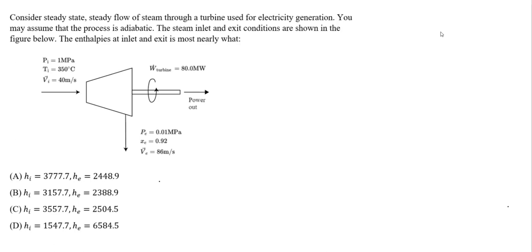I want to do an example for thermodynamics where we use the steam tables to determine the enthalpies at the inlet state and exit state. This is going to be important — knowing how to use the steam tables will help us use the first law of thermodynamics and other questions involving thermodynamics. We want to consider a steady state and steady flow of steam through a turbine used for electricity generation. Assume the process is adiabatic. The enthalpies at the inlet and exit are most nearly what?